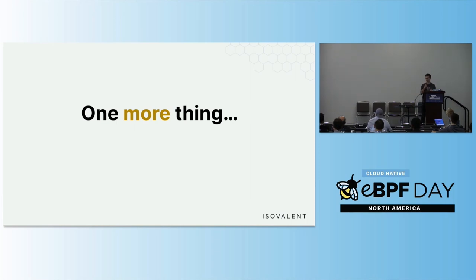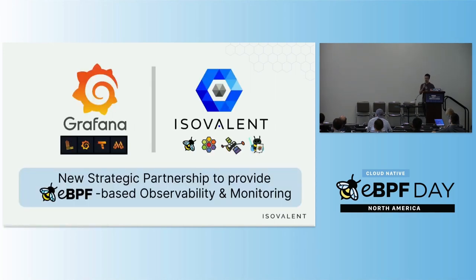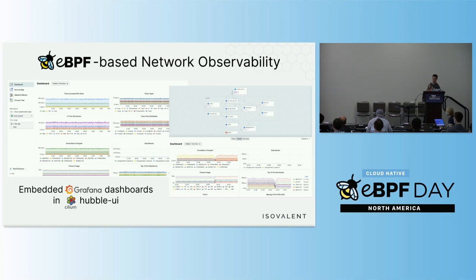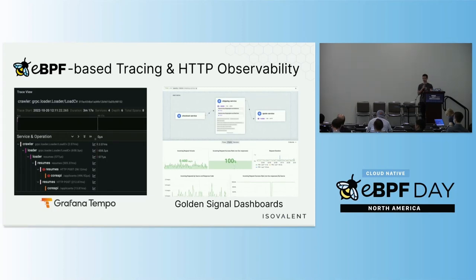One more exciting area is observability. We're happy to announce a new partnership between Grafana and Isovalent. Grafana brings their full observability stack — Loki, Grafana, Tempo — and Isovalent brings Cilium, Tetragon, and Hubble for observability, along with our eBPF expertise. Together we're building new tools: network observability with Grafana dashboards embedded directly into Cilium's Hubble UI, as well as eBPF-based HTTP tracing, golden signal dashboards, and integration with Grafana Tempo to trace individual HTTP requests — all without sidecars or proxies.